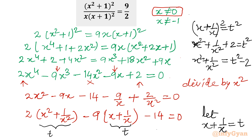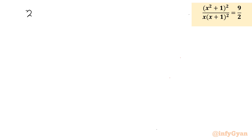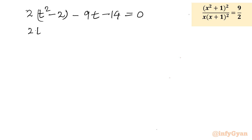Substituting t² minus 2 for x² + 1/x² and t for x + 1/x, we form the quadratic: 2(t² minus 2) minus 9t minus 14 equal to 0, which expands to 2t² minus 9t minus 18 equal to 0.